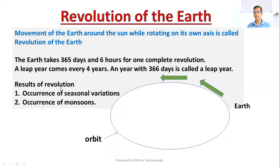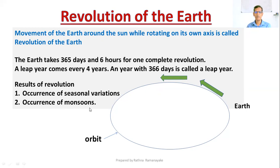A year with 366 days is called a leap year. Now, results of revolution — can you name two results of revolution? One is the occurrence of seasonal variations. Another one is the occurrence of monsoons.